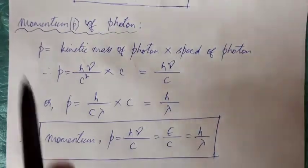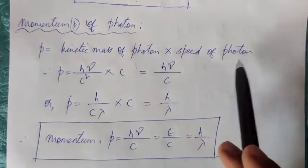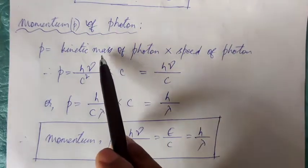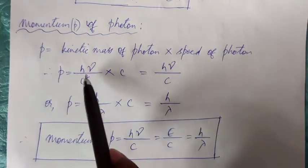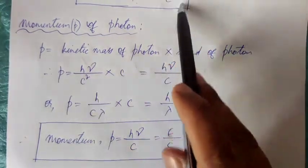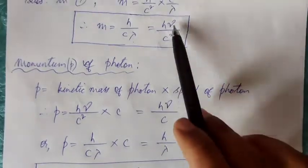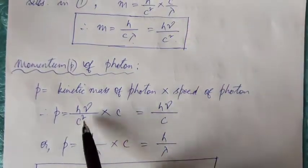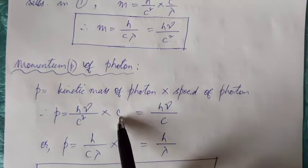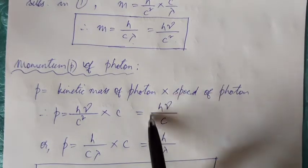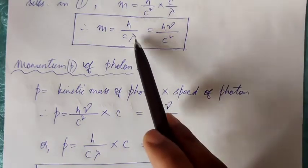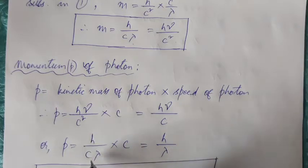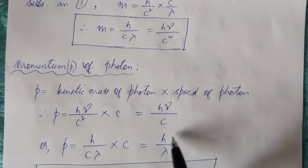Another thing. Now, momentum of a photon. Momentum, we know, basically, is mass into velocity. But here, we need to talk about kinetic mass of a photon and its speed. So photon, its mass is h nu by c squared. So h nu by c squared mass into speed of photon is c. We get h nu by c. So this is one expression for momentum of a photon. Another expression for mass was h by c lambda. So, using that expression for mass into velocity is h by lambda. So, momentum is h by lambda.